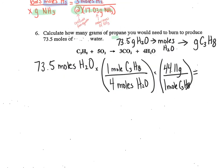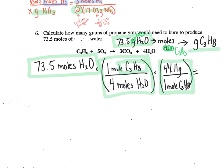Here are my steps for the last problem. I'm starting with 73.5 moles of H₂O and need to get to grams of C₃H₈. I'll do that by first using my mole-to-mole ratio, then using the molar mass of C₃H₈ to convert to grams of C₃H₈.